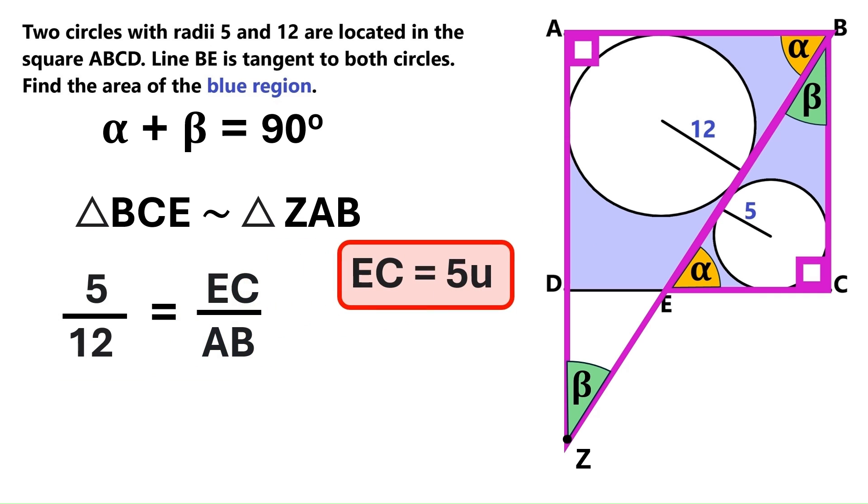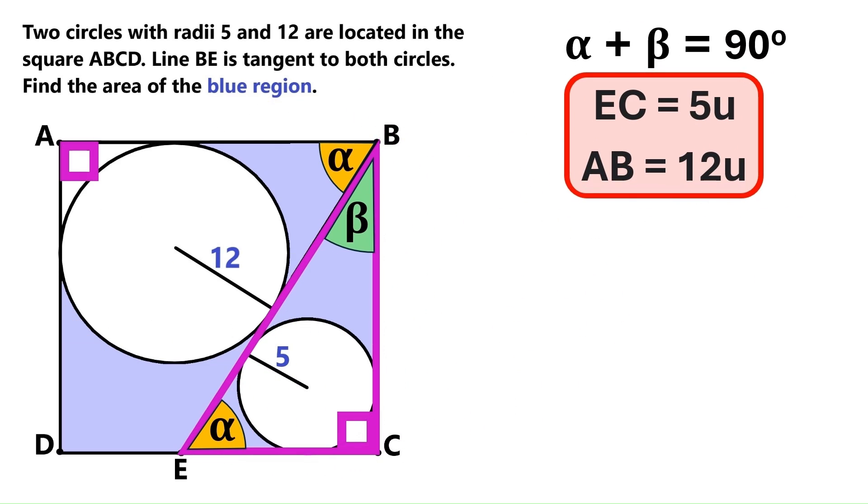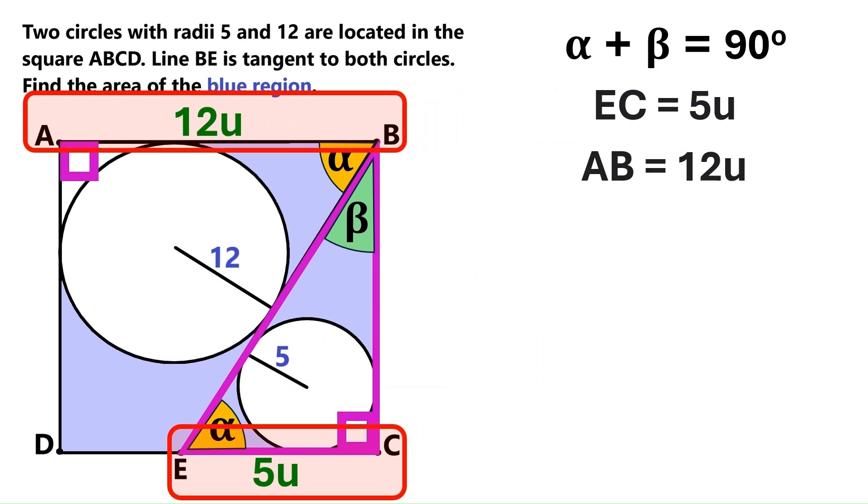Let's go ahead and assign EC the value of 5U, and AB will be 12U. Let's go back to our original image, and let's place these values next to the line segments they belong.